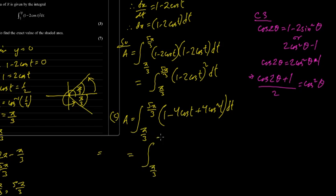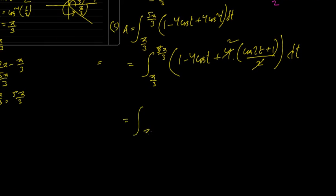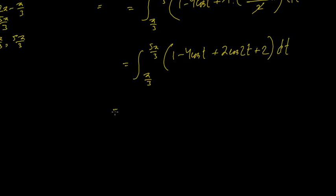Let's write this down now. Pi by 3, 5 pi by 3, 1 minus 4 cos t plus 4. Instead of cos square theta, I am going to write this: cos 2 theta plus 1 divided by 2 dt. So this 2 and this 2 cancels off. So pi by 3 to 5 pi by 3, 1 minus 4 cos t plus 2 into cos 2t plus 2 into 1 dt.